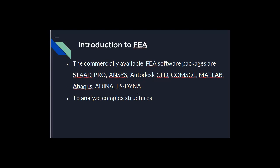There are many commercially available finite element software packages. The most common and widely used are: NASTRAN, Ansys, Autodesk, CFD, COMSOL, MATLAB, Abaqus, Adina, and LS-DYNA. These software packages are used to analyze complex structures. Based on the nature of the structure, the appropriate software tool can be selected — for example, Ansys for structural stability, MATLAB for mathematical equations, and Autodesk CFD for calculating fluid pressure inside pipes.